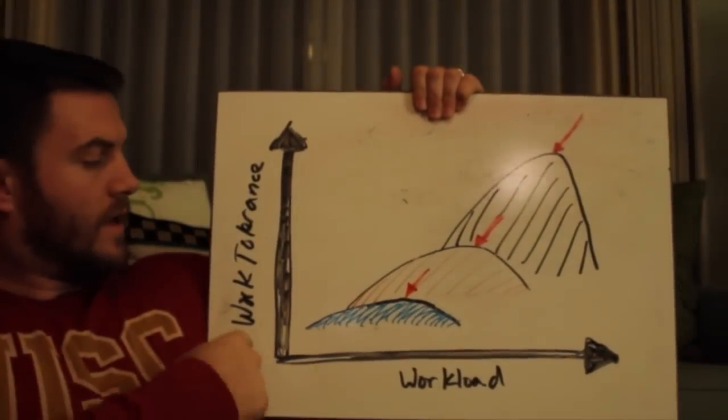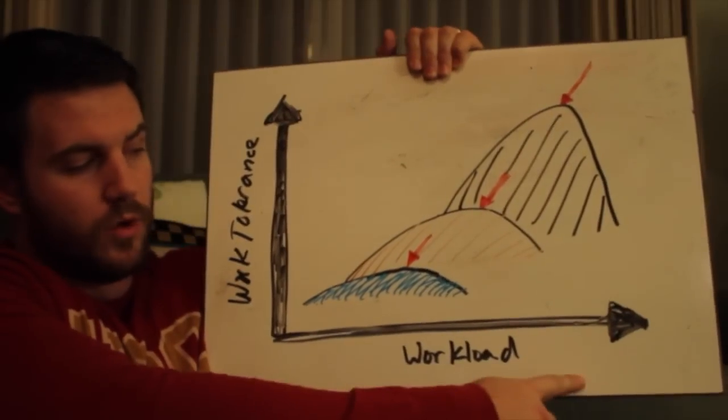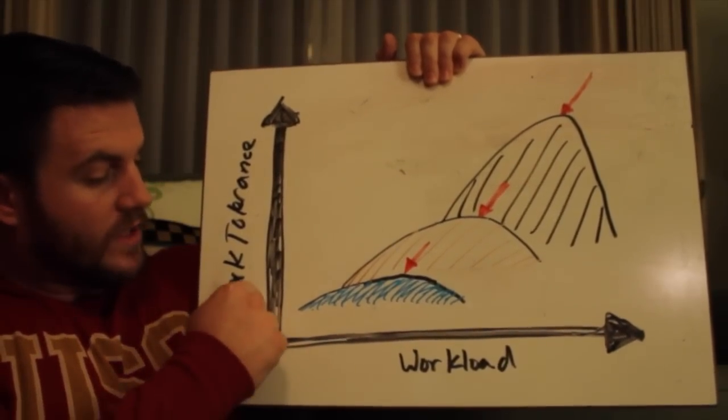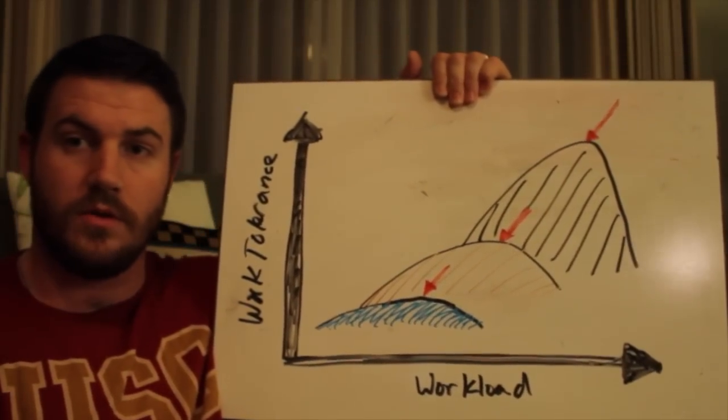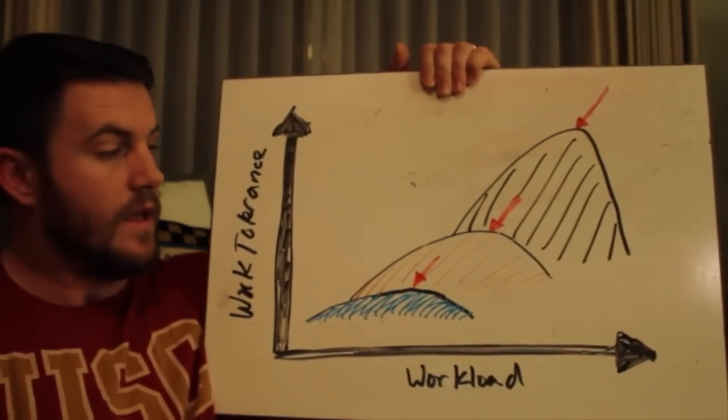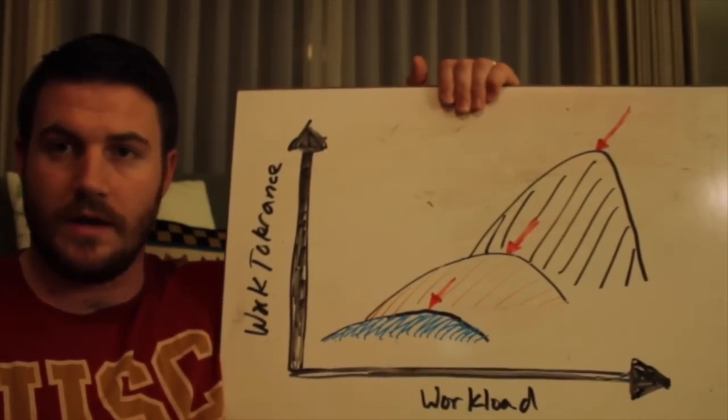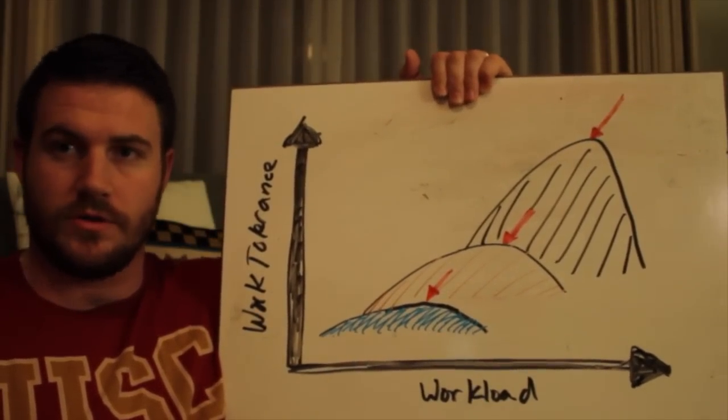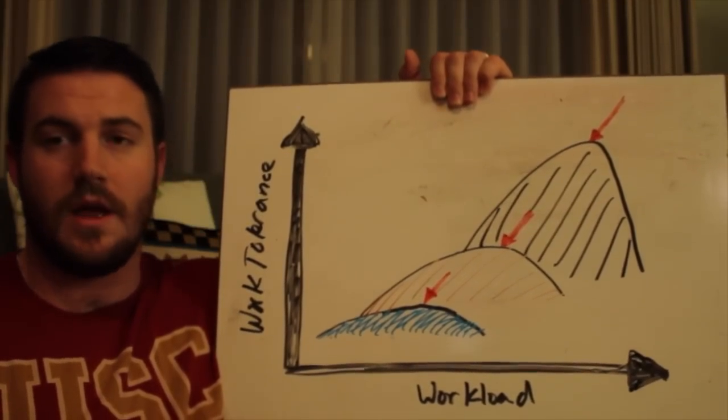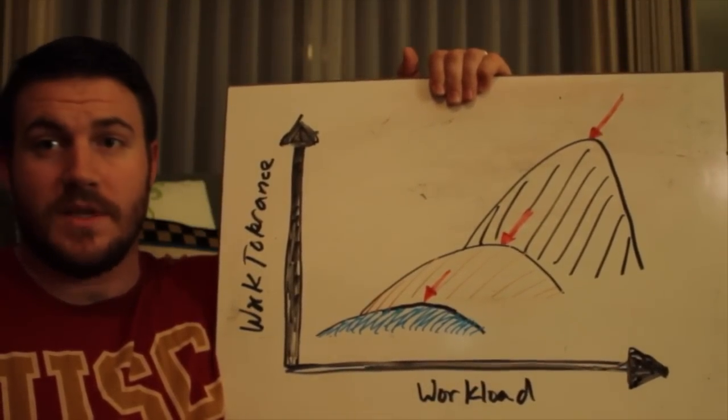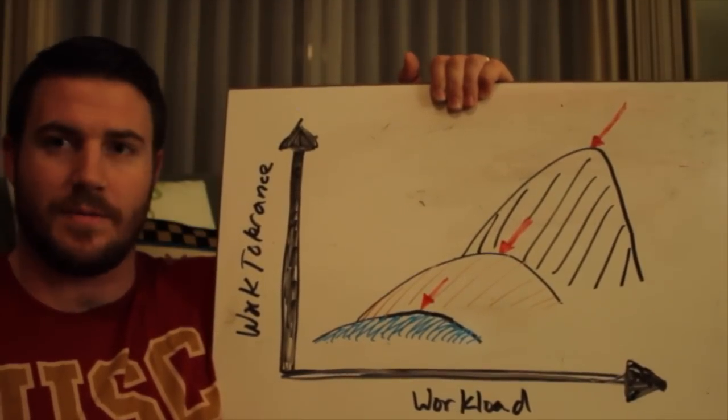You can see here that this section is about work tolerance whereas this is about workload. As your work tolerance increases, the amount of work or volume that you can do and recover is increasing. As you become more and more trained, it takes a larger stimulus for your body to be thrown out of homeostasis so that it has to adapt because you're becoming more adapted to the training stimulus. So you need more stimulus to have more adaptation.